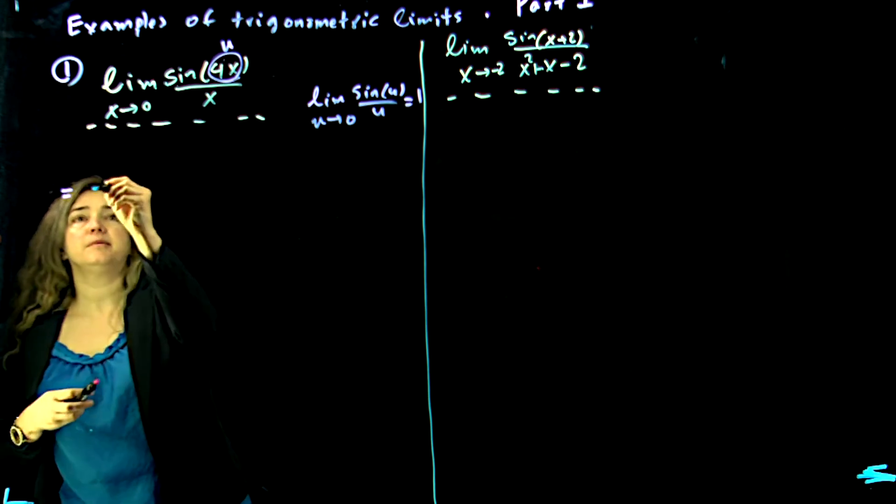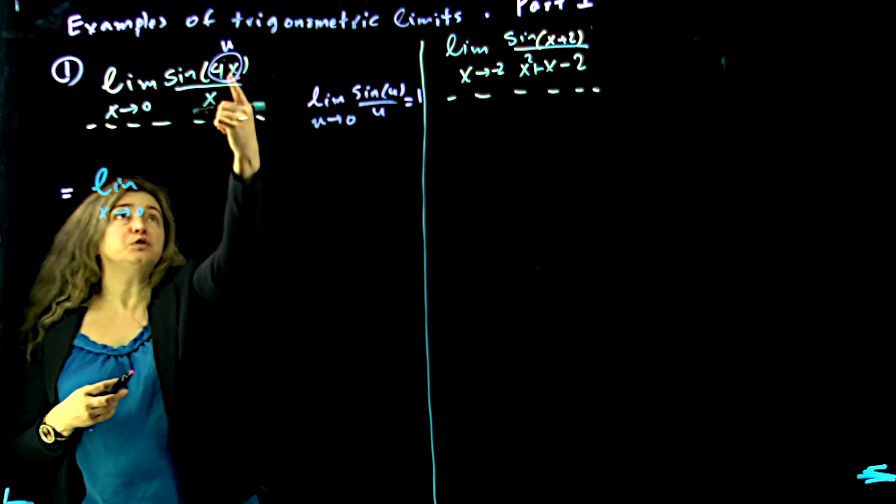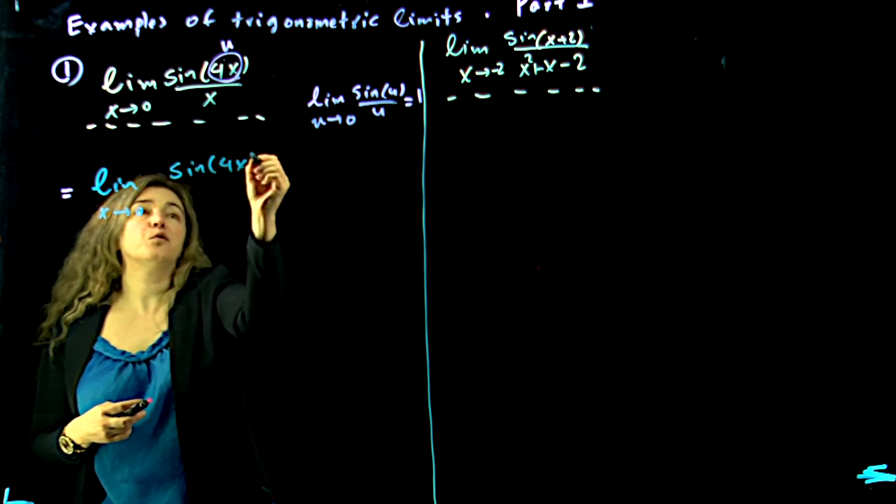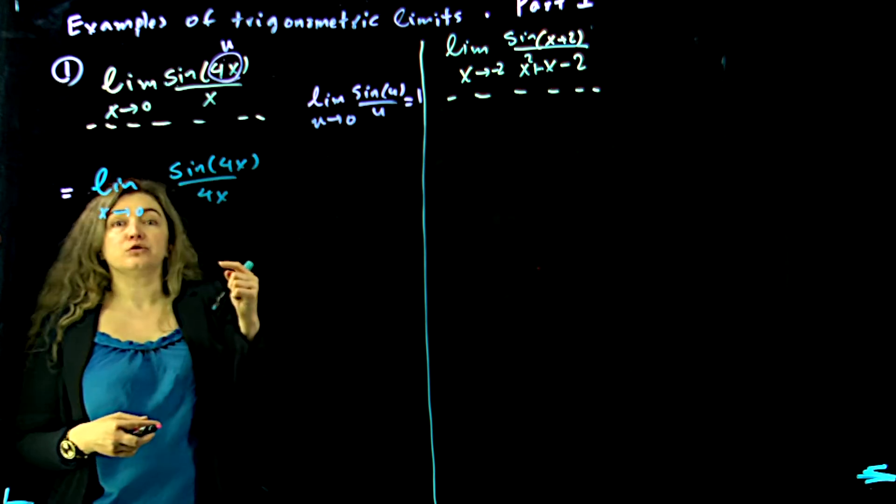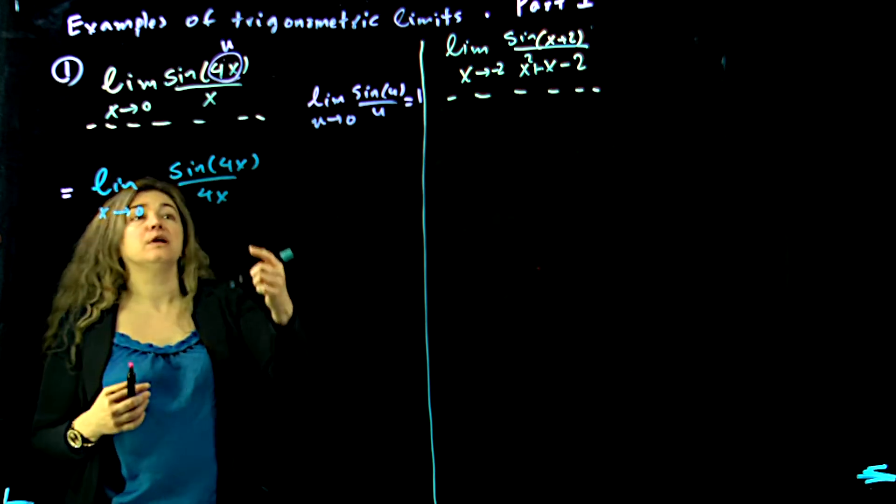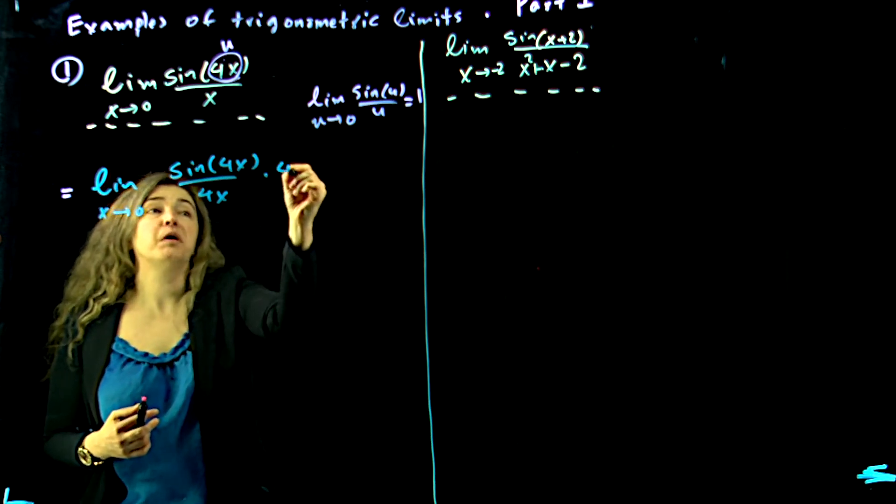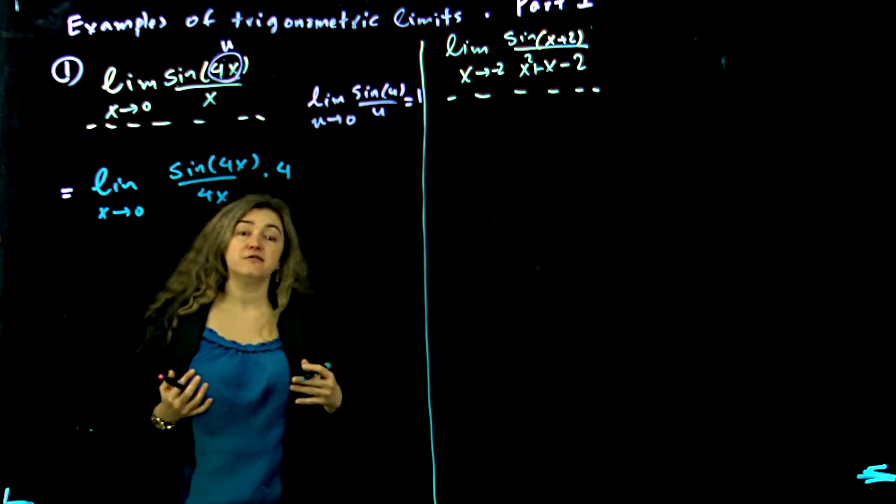Let's write this up: limit as x approaches 0. u is 4x, so I want to have sine of 4x over 4x, right, but that does not equal to that. How do I make it equal? I divided the entire fraction by 4, so I should multiply by 4 so I do not change the entire fraction.